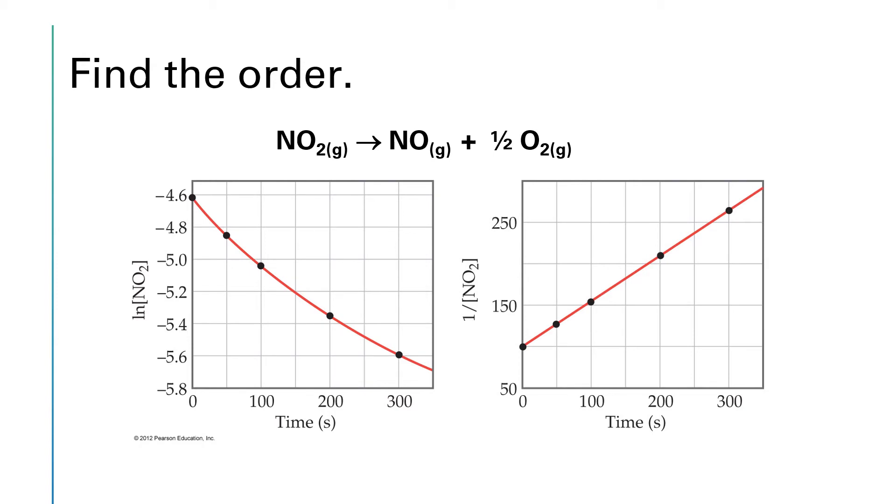Here would be another example of one of these integrated rate law problems. We're not given all three plots in this case, but we are given two of the three plots. And one of them is very clearly linear. That first plot, the log plot, has quite a bit of curvature to it. But that second plot, the reciprocal plot, is very much a straight line.